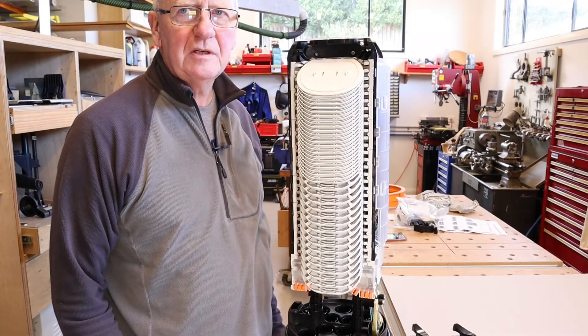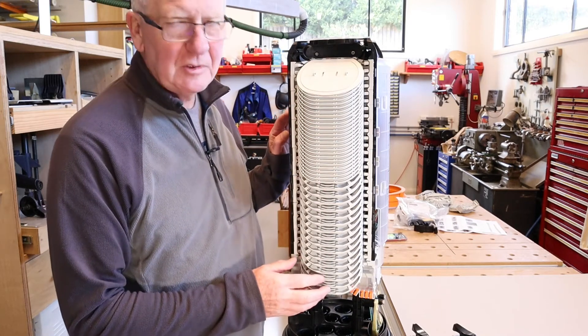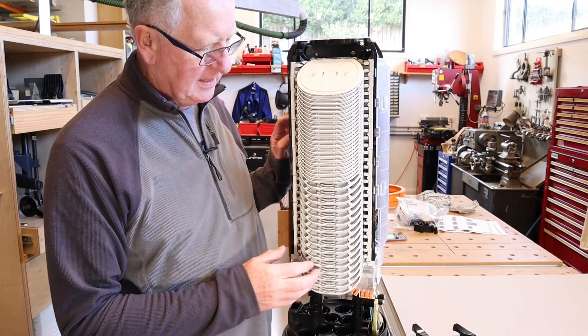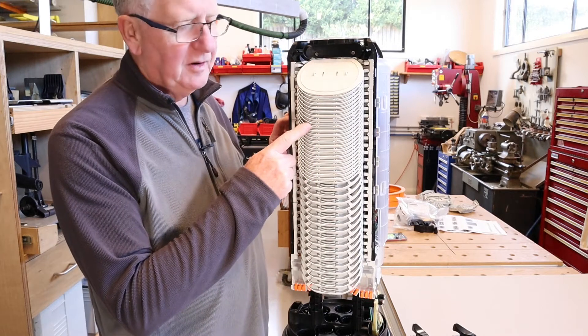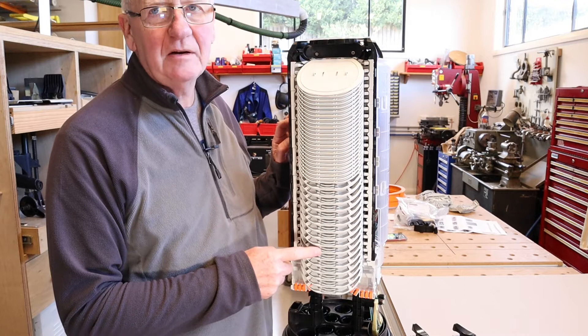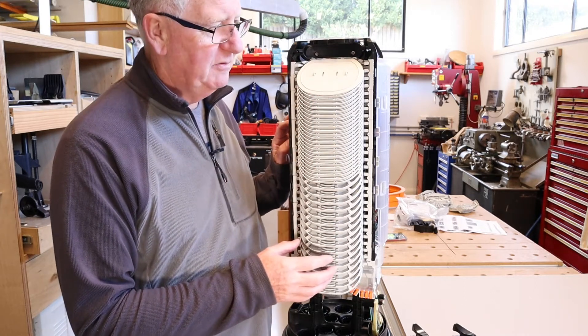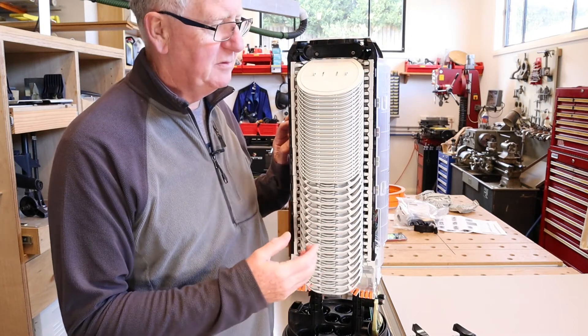I just wanted to show you some more features of the Prismian joints. This particular LMJ has got a mixture of trays. It's got the 24 fiber trays here and some ribbon trays down here, and that is one of the benefits because it's modular. You can actually mix and match different types of trays to suit the different types of applications.